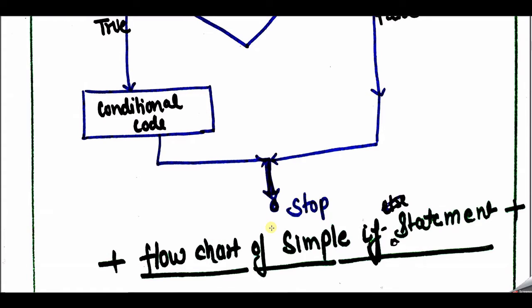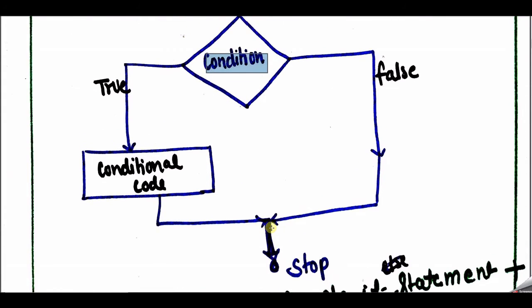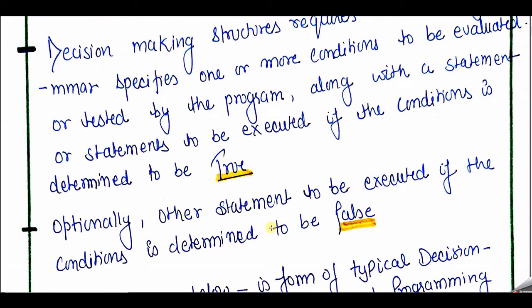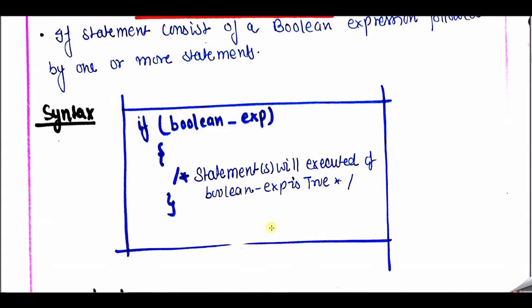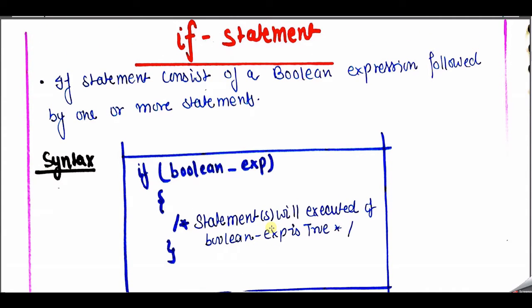This is a simple flowchart of the simple if statement — not if-else, only if. That means according to the true condition only the conditional code is given; no false conditional code is given here. So this is a basic flowchart of the if statement, and the if statement is known as the basic decision-making statement. The if statement consists of a boolean expression followed by one or more statements. When the condition is true we perform the statements; when the condition is false we don't need to perform anything, so we use only the if statement.